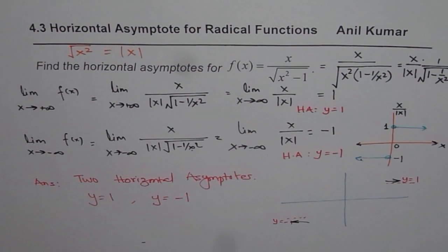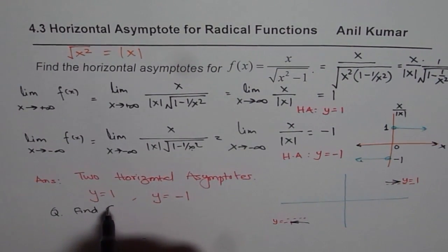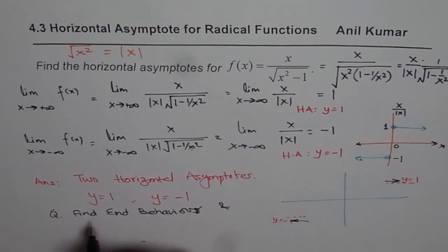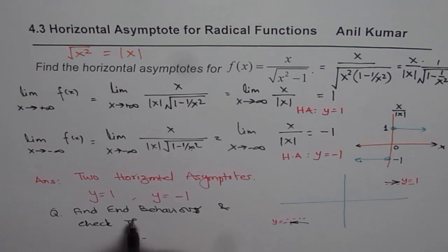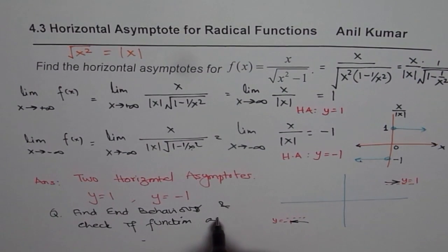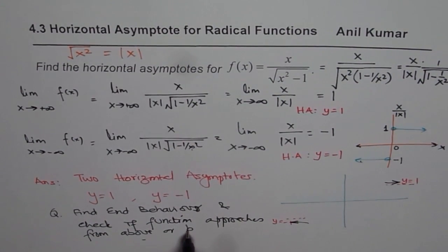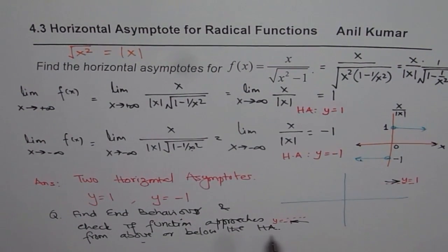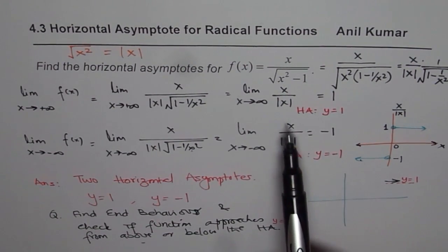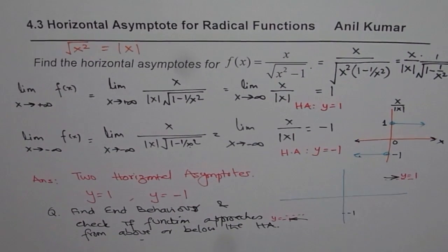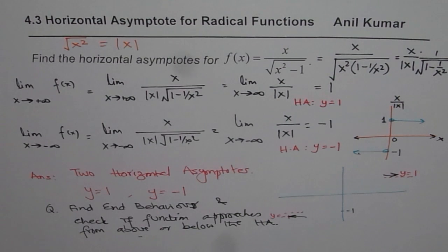So the question for you is: find the end behavior, and check if the function approaches from above or below the horizontal asymptote. I would like you to check this — use your calculator, plug in a value of plus 100 for the positive infinity case and minus 100 for the negative infinity case, and see for yourself what you get. I hope that helps you understand the concept. Thank you and all the best.